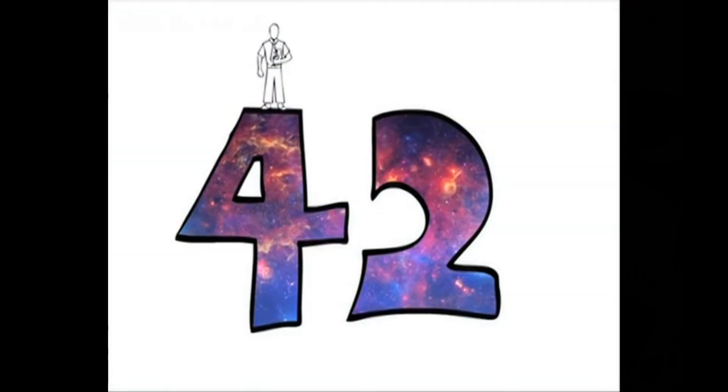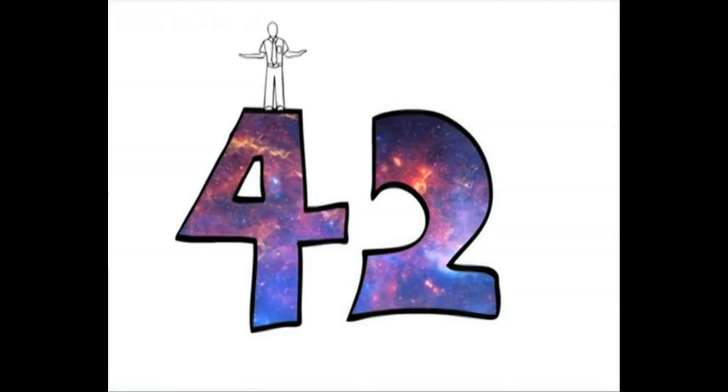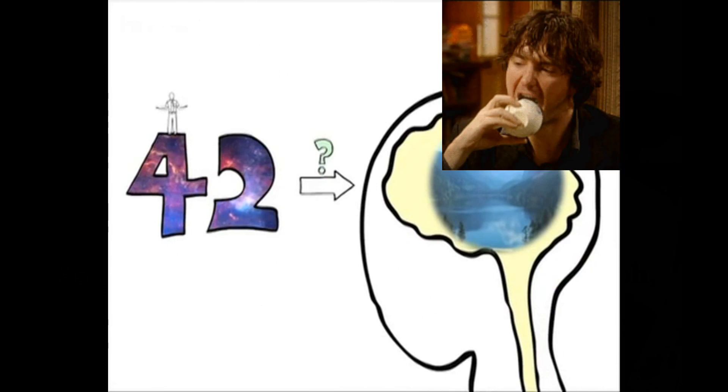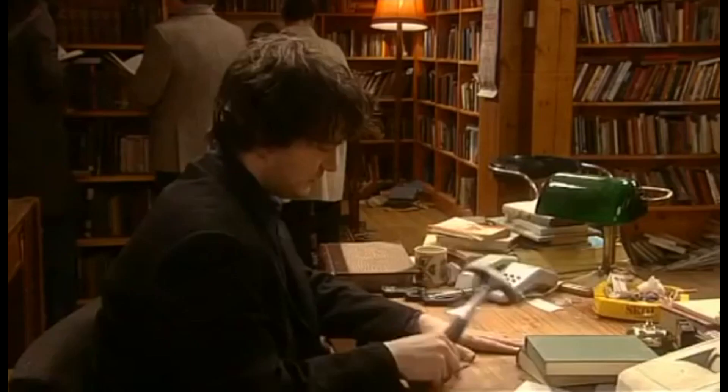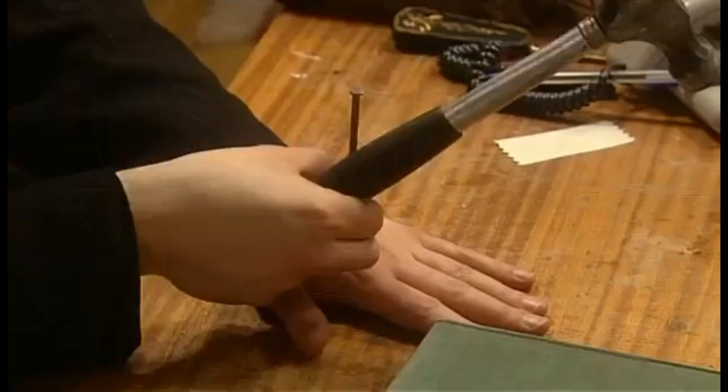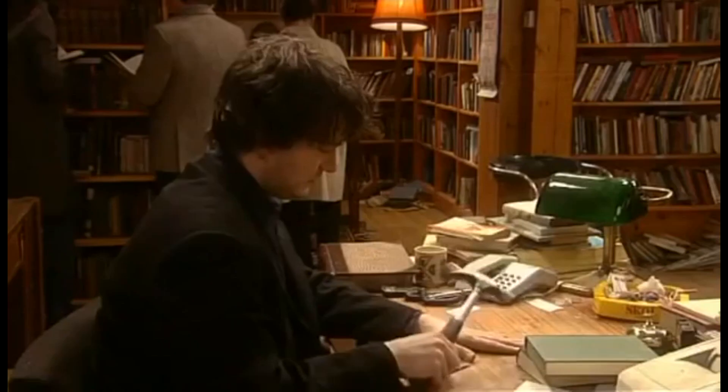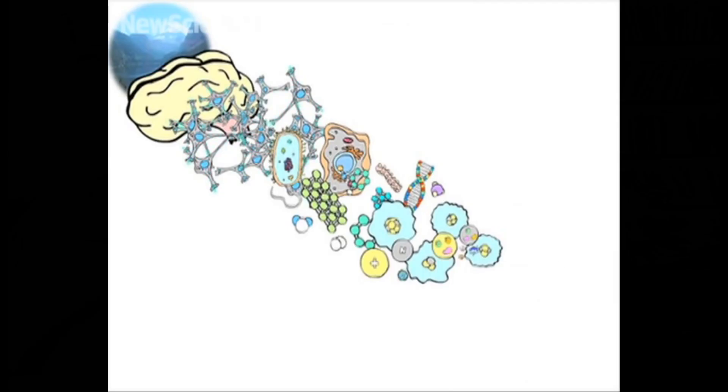If math is really the ultimate reality, then how would you explain something really complicated, like consciousness? You might start by saying consciousness is what human brains do. And to understand brains, you have to look at neurons, which are cells, and behave according to the laws of biology. But biology is just complicated chemistry. And chemistry is just complicated physics, which, as we saw, is ultimately math.